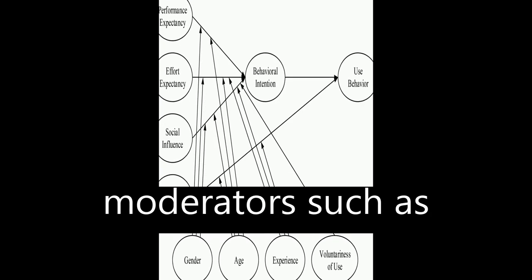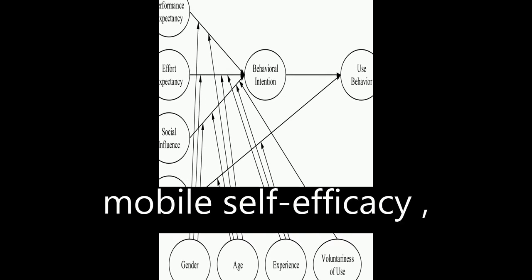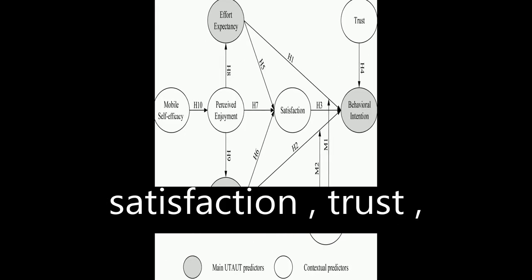The UTAUT model included additional moderators such as perceived enjoyment, mobile self-efficacy, satisfaction, trust, and perceived risk.